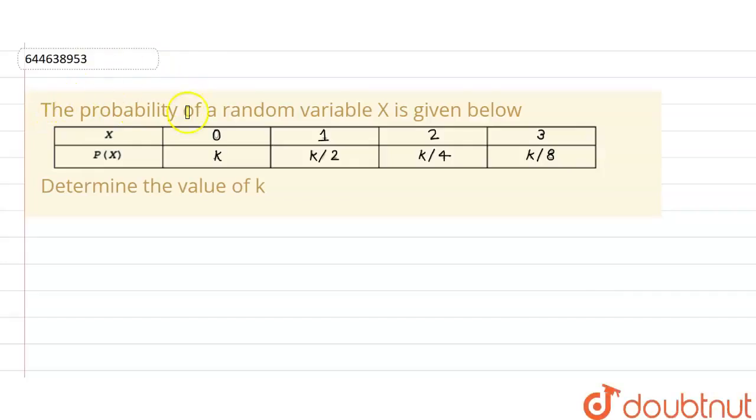Hello friends, we have given a question here. The probability of a random variable X is given below. Determine the value of k. Here, so we have to find the value of k. As we know, when we have given this type of problem, the total probability will be equal to one.